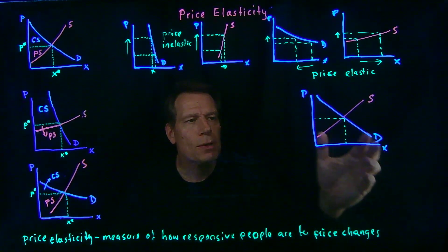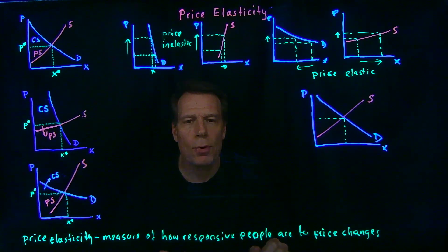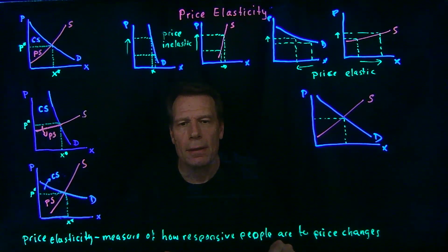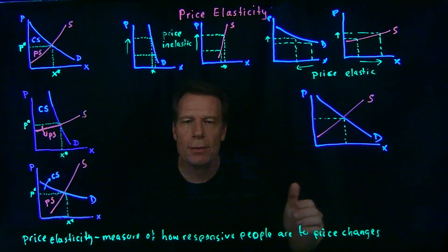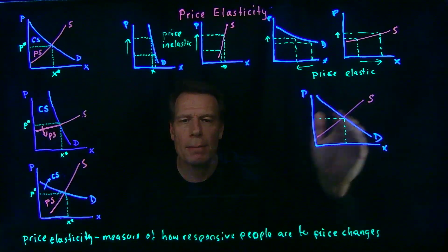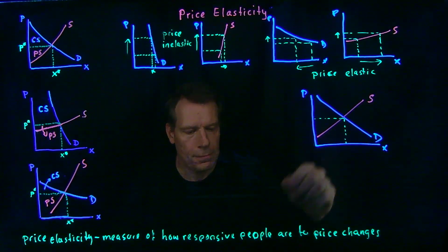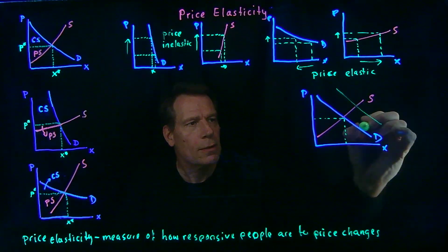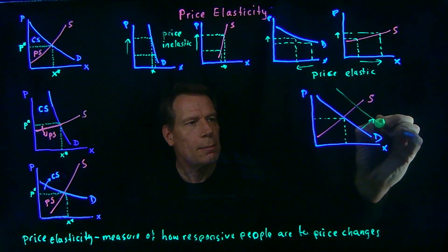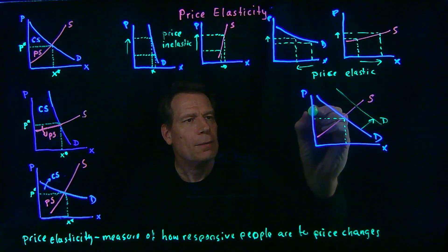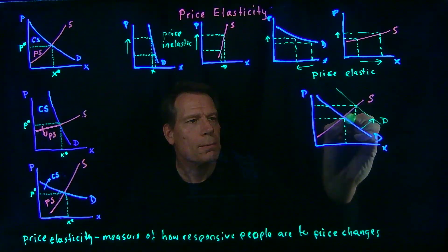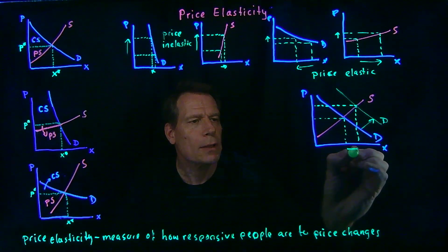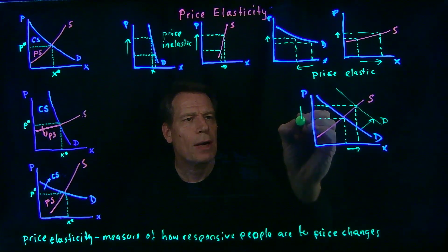Or if we had more consumers entering the market — perhaps more consumers have found out about this good and are flooding the market — that would mean we're adding over more household demand curves, and that would shift the market demand curve to the right. We would see an upward shift in the demand curve, taking us to a new equilibrium where the quantity has increased and the price has increased.